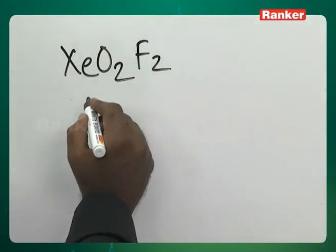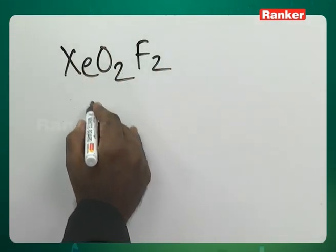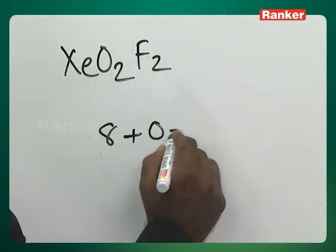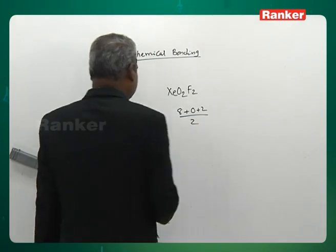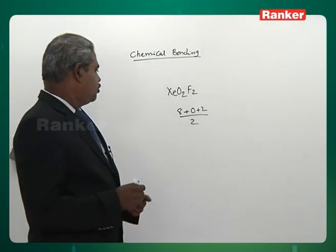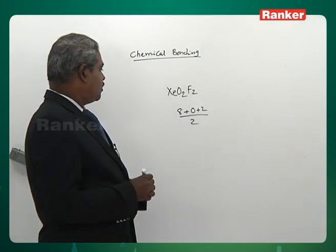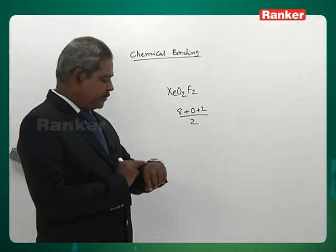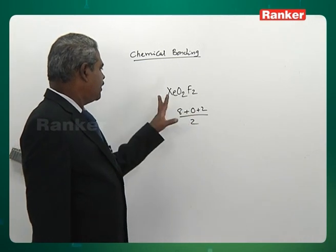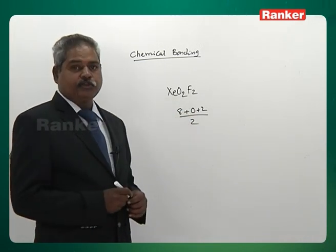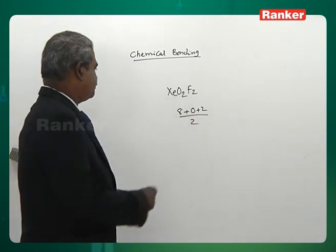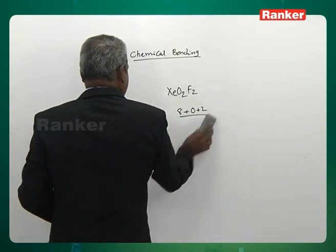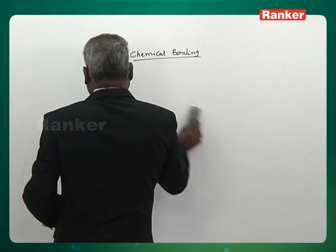XeO2F2: xenon has 8 valence electrons. Oxygens not considered; M = 2 (two fluorines). H = (8 + 0 + 2) / 2 = 5. Hybridization is sp3d. So hybridization can be found quickly for any molecule using this formula.